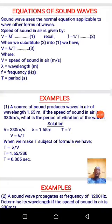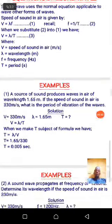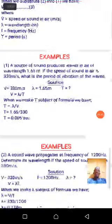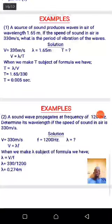Substituting f equals one over T into v equals lambda f gives us equation three: v equals lambda over T, where T is the period. The units are: v in meters per second, wavelength in meters, frequency in hertz, and period in seconds.